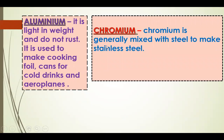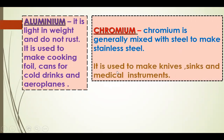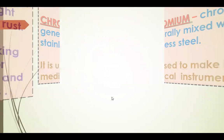Chromium is generally mixed with steel to make stainless steel. It is used to make knives, sinks and medical instruments.